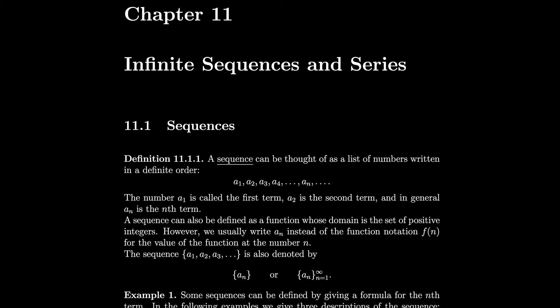A sequence can be thought of as a list of numbers written in a definite order: a1, a2, a3, a4, and so on — we get to an and then keep going, potentially. The number a1 is called the first term, a2 is the second term, and in general an is the nth term.